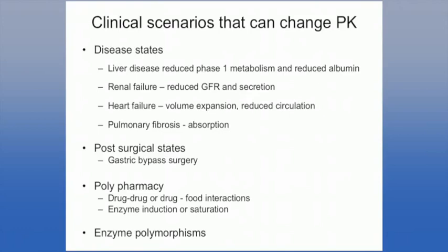Heart failure is a common condition where fluid retention increases circulating plasma volume, altering the volume of distribution. Poor left ventricular function reduces circulation and therefore delivery of drug to its site of action and to the kidney. Patients with pulmonary fibrosis or asthma receiving inhaled drugs via nebulizers or inhalers may have reduced drug absorption from the delivery site. There is a plethora of different disease states that can impact the pharmacokinetic profile.